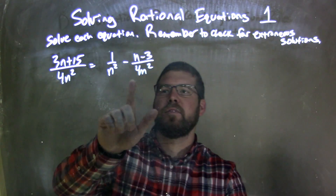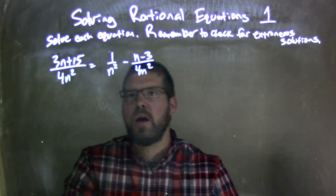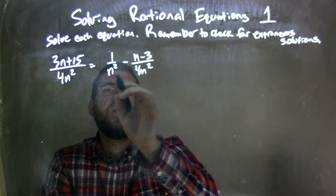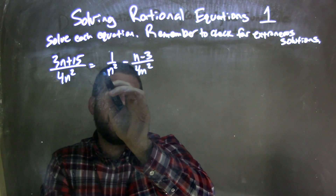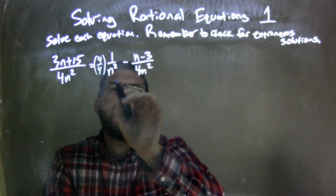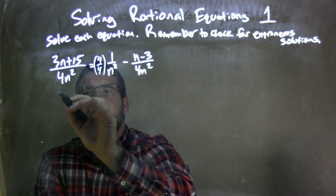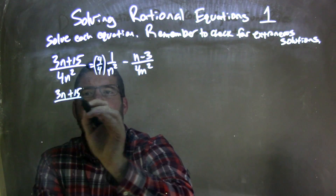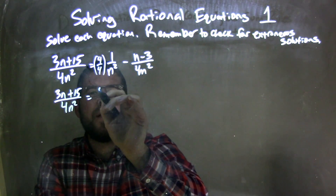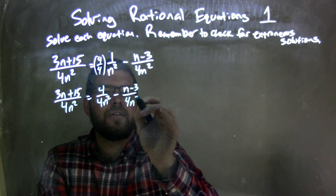I see that they don't have the same base — these two fractions, 1 over n squared and n minus 3 over 4n squared. So I need to make them so they have the same base so that I can combine them, I can subtract them. All I need to do is really have a 4n squared down here. So if I multiply this by 4 over 4, which is essentially 1, that would give me a 4n squared in the base. So I have 3n plus 15 on the left over 4n squared equals, now multiplying that 4 over 4n squared minus n minus 3 over 4n squared.